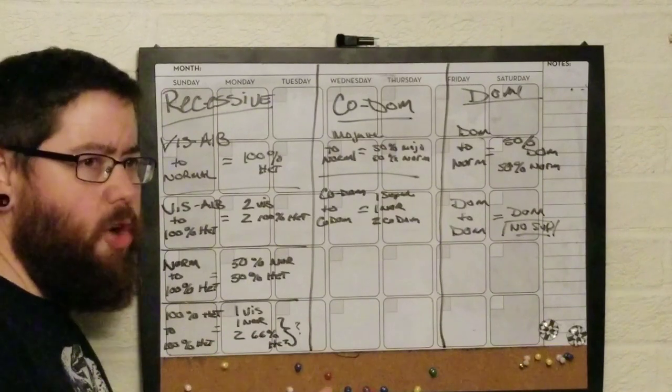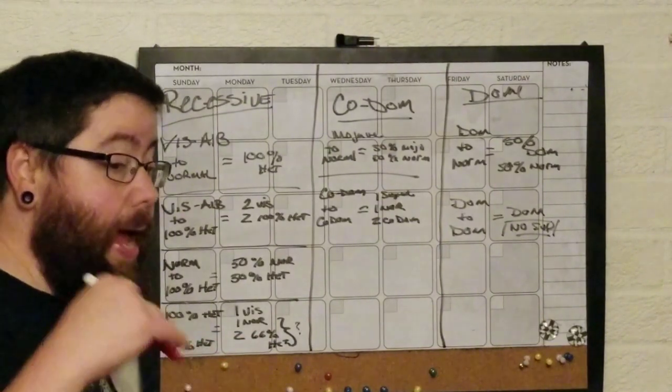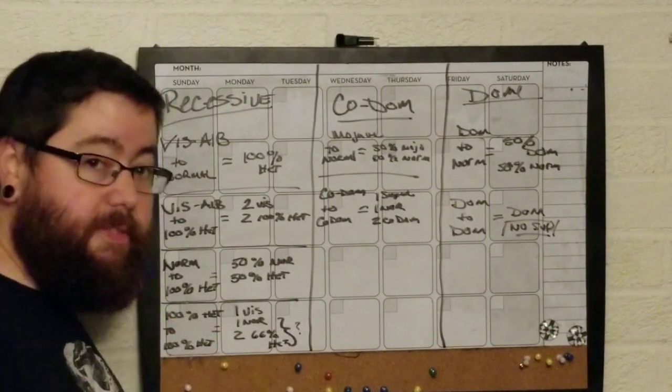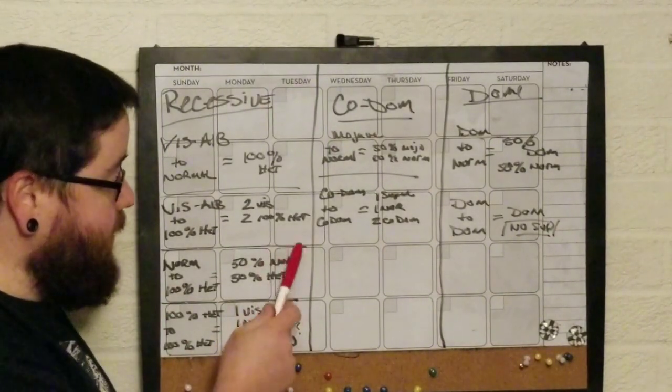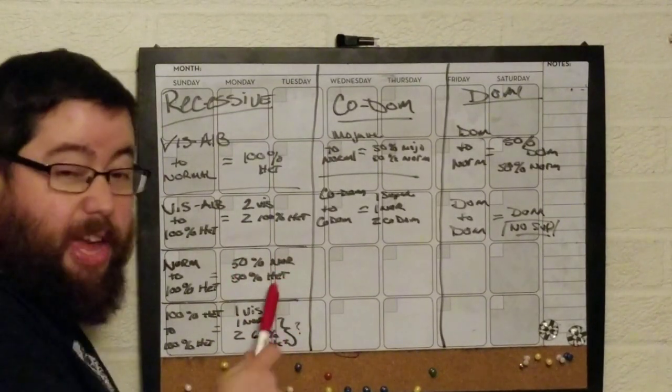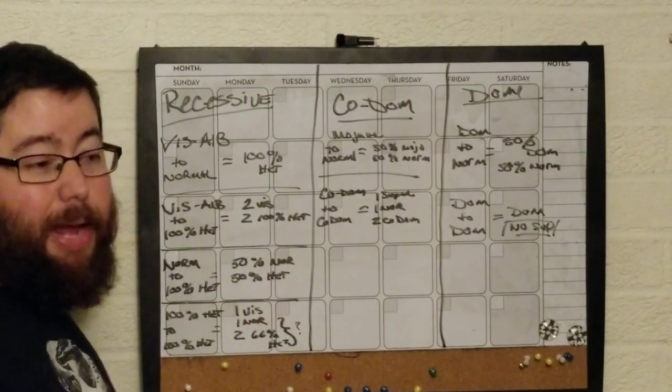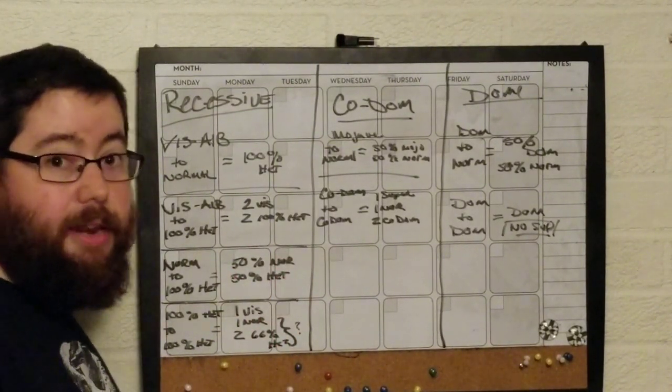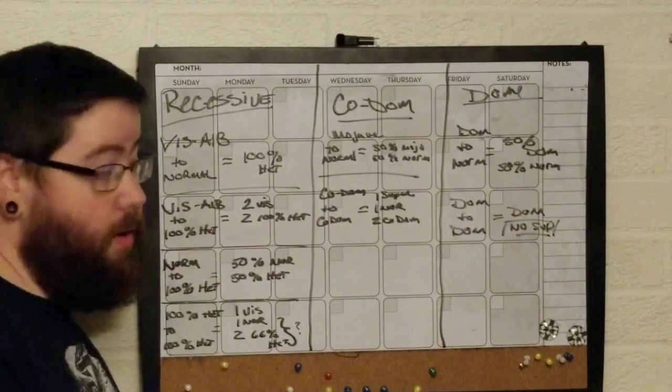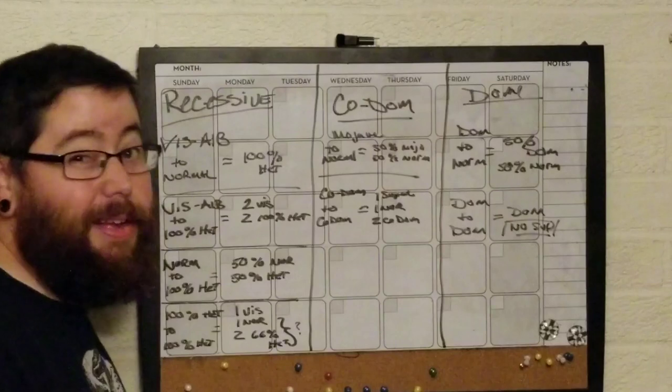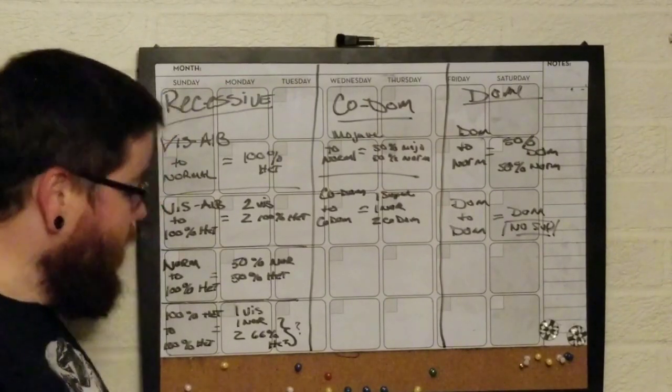That's why most of the time when dealing with het, you really want to deal with someone that you know, and you want to deal with 100% het. Because then you know, even though it's not 100% that you're going to get a visual, you have a way better chance of getting a visual. Because you could take this 50% het, or what you think would be a 50% het, and breed it once and get nothing. You could breed it a second time and then all of a sudden you get something. Or if it really isn't heterozygous, you get nothing.